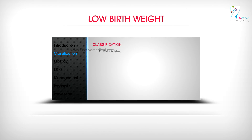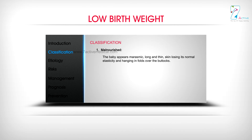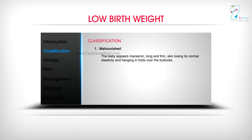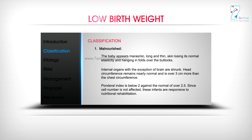Classification. 1. Malnourished: The baby appears marasmic, long and thin, with skin losing its normal elasticity and hanging in folds over the buttocks. Internal organs, with the exception of the brain, are shrunk. Head circumference remains nearly normal and is over 3 cm more than the chest circumference. Ponderal index is below 2 against a normal of over 2.5. Since cell number is not affected, these infants are responsive to nutritional rehabilitation.